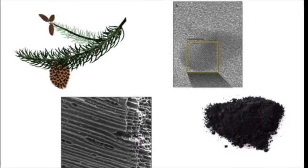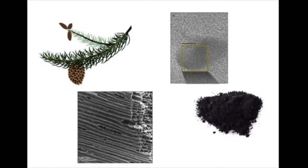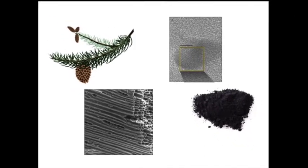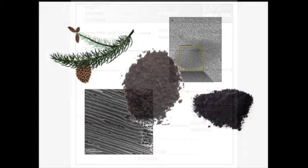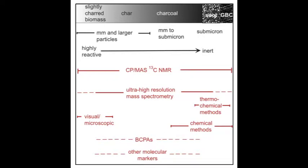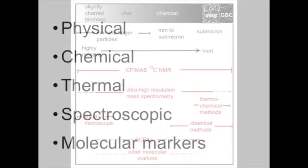Because pyrogenic carbon takes many forms, and because it is often found in a variety of heterogeneous mixtures like soils and sediments, a number of methods have been developed to isolate, quantify, and characterize it. These can be grouped into five categories.